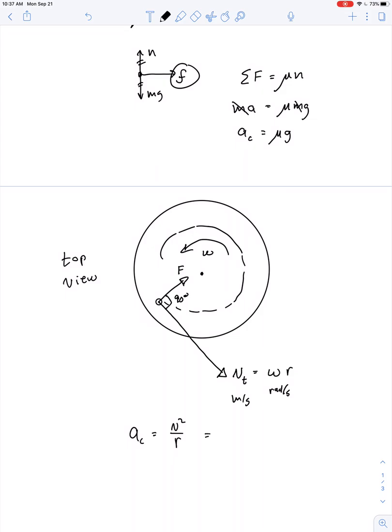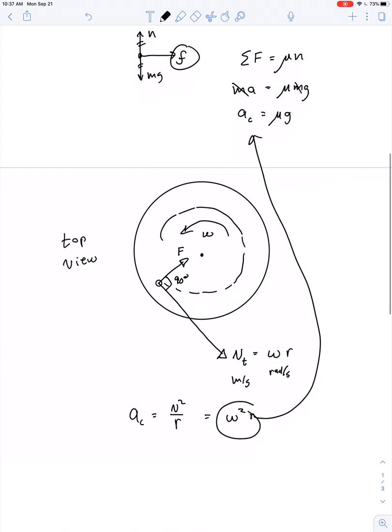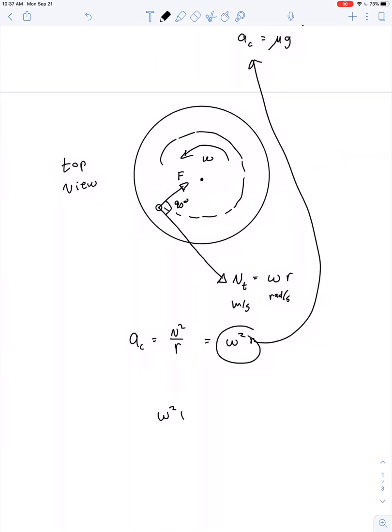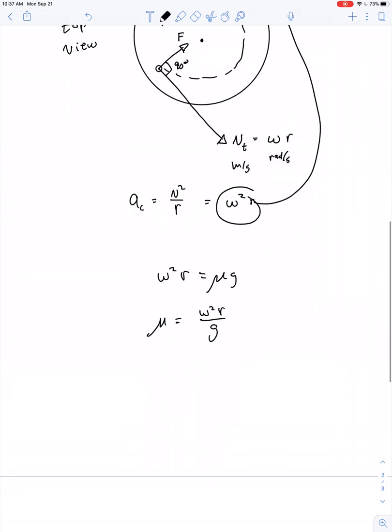So we can make that substitution into our work. And omega squared times R is equal to μg. So the coefficient of friction would have to be equal to omega squared times R divided by g. So let's do a unit conversion, and we can plug in for this numerical example.